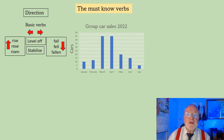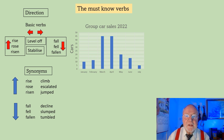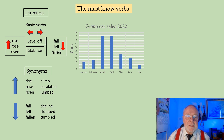It would be pretty boring if you just used those, so let's have a look at some synonyms to spice it up a little bit. Rise, climb, rose, escalated, risen and jumped are all upward movements. Fall, decline, fell, slumped, fallen, and tumbled are all downward movements.